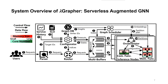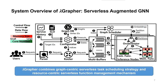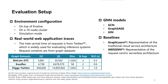Therefore, we propose a resource-efficient serverless system for GNN serving called LambdaGraph, utilizing a serverless-augmented GNN design that integrates graph-centric serverless task scheduling and resource-centric function management for optimal resource efficiency.